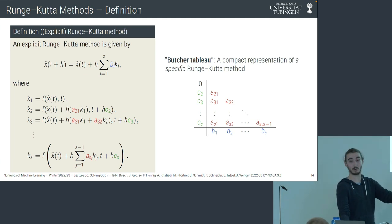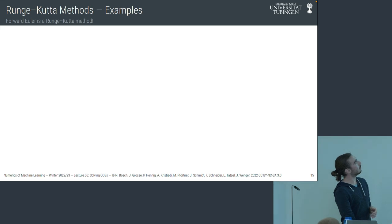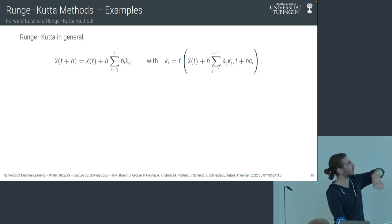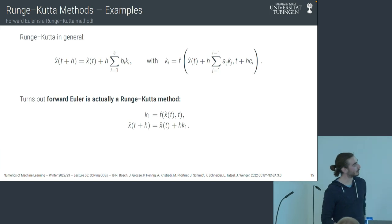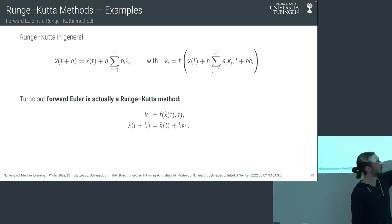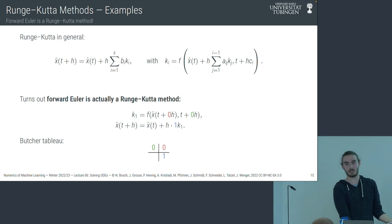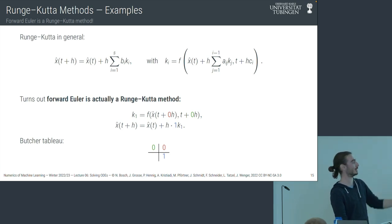Let's look at Runge-Kutta method examples. As already noted, the very first and simplest Runge-Kutta method is forward Euler. If we replace the f term with K1, it satisfies the equation and we can write down a Butcher tableau — just a very simple one. If you go to the Wikipedia list of Runge-Kutta methods, this is literally the first one listed. Unsurprisingly, backward Euler also fits the definition of an implicit Runge-Kutta method.